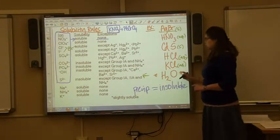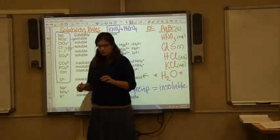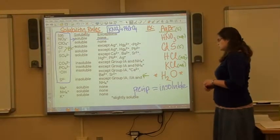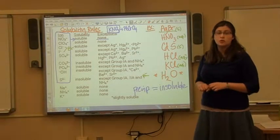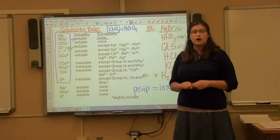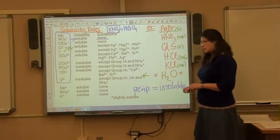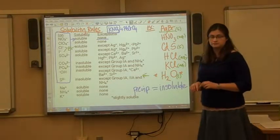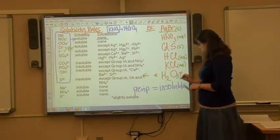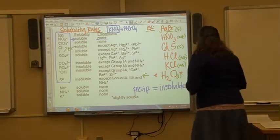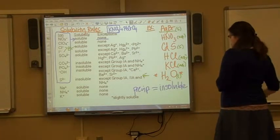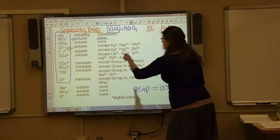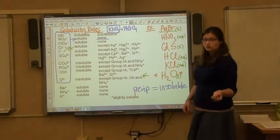Water was a product on the last problem. Water is neither aqueous nor solid — when formed as a product it is a pure liquid, so it's given the (l) designation, a small L. This chart can be a little tricky to use; make sure you're reading all the way across the line to check for exceptions.